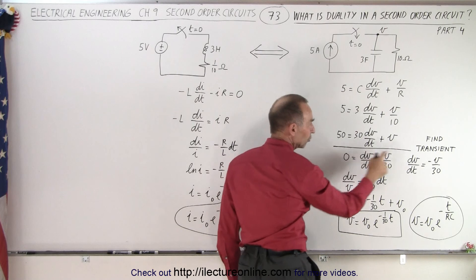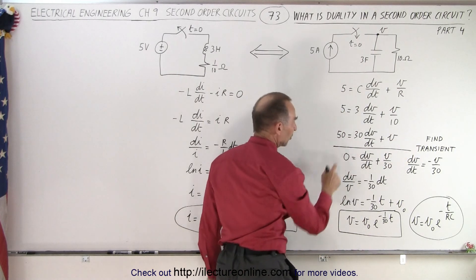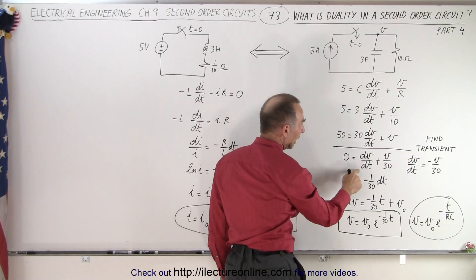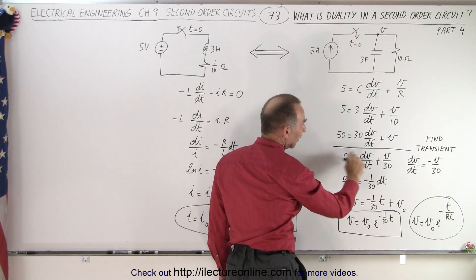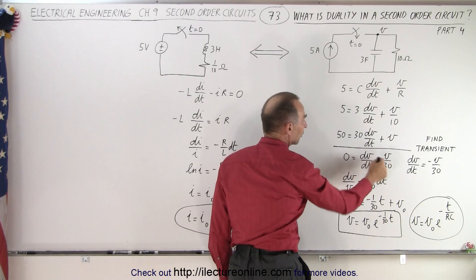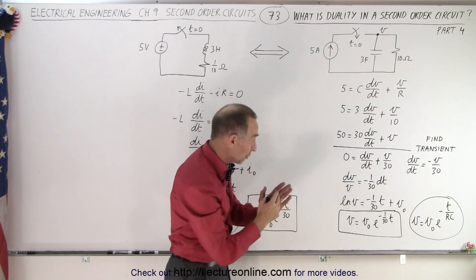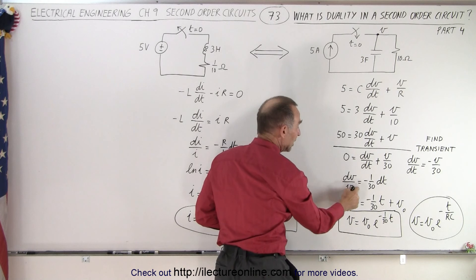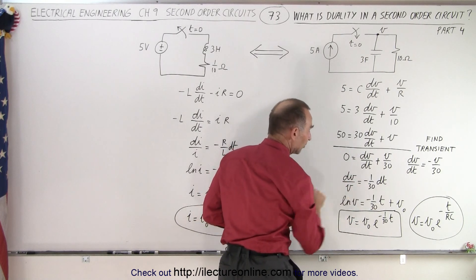we then want to find the transient equation. So we set this equal to zero, and we divide both sides by 30, so we have this in isolation: dv/dt plus v over 30. Then we rearrange, we separate the variables, we have dv over v equals minus 1/30 times dt.